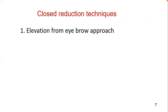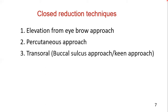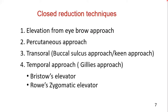Several closed reduction techniques are available. Number one is elevation from the eyebrow approach. Second is the percutaneous approach. Third is the trans-oral buccal sulcus approach, also called the Keen approach. Fourth is the temporal approach, known as the Gillies approach. In this video we will explain the first three types, and the Gillies approach will be described in another video.